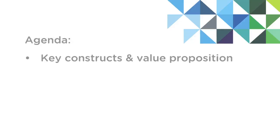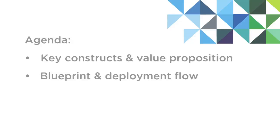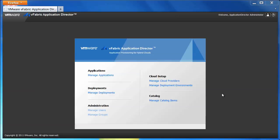First, I will orient you to the key constructs and value proposition of the product by showing you the design time view. Next, I'll start by creating an application topology, which we call a blueprint, and walk you through the deployment flow. Finally, we'll view the deployment status. I am logged in as an application architect who wants to create an application and later deploy that application to the cloud.